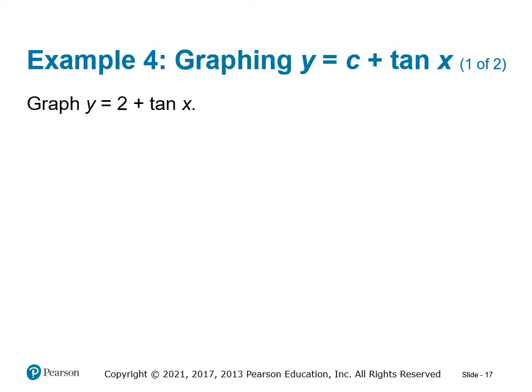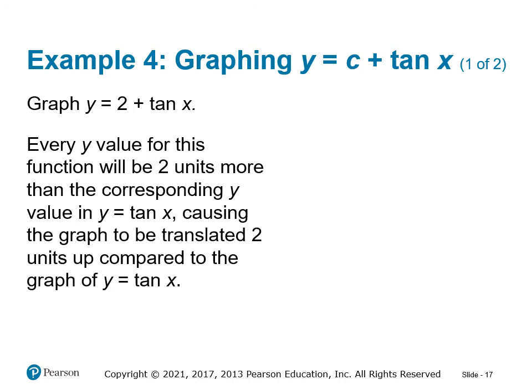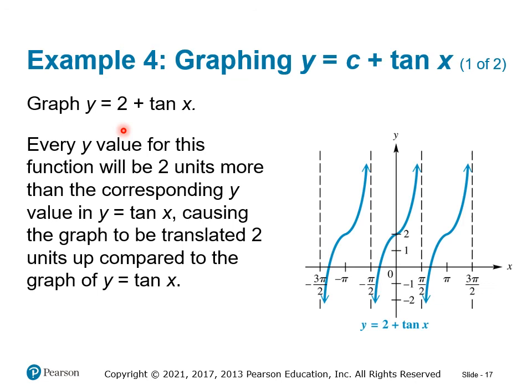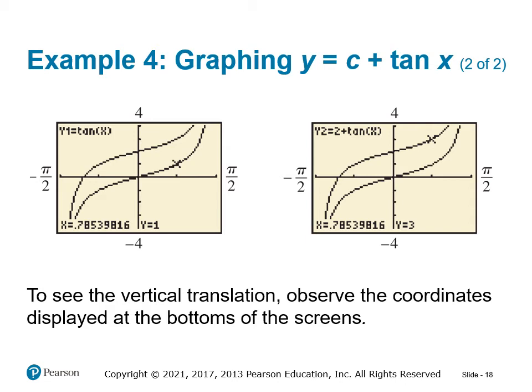Let's look at a model that includes a vertical shift. Every y value of this function will be 2 units more than the corresponding y value in y equals tangent x, causing the graph to be translated 2 units up. For this simple case we don't really need to use the table — we can just shift the graph up by 2 units, which you can also verify with a calculator.